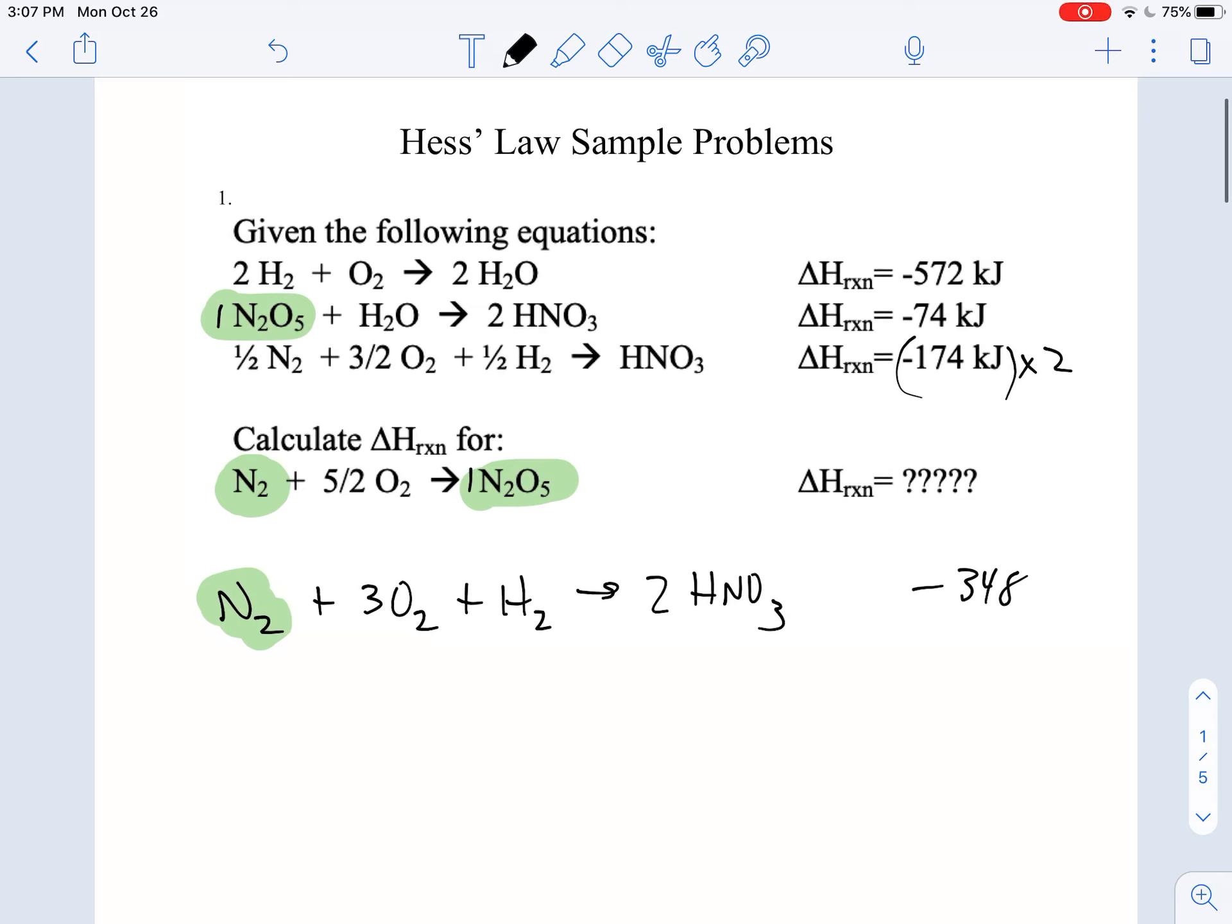So what I have to do is I have to take this whole equation and I have to flip it and take the products and turn them into reactants and their reactants and turn them into products. So I'm just going to take that equation and write it in reverse. I'm going to write 2HNO3 and I'm going to go over here and form an N2O5 and an H2O.